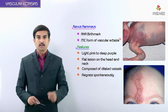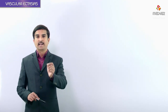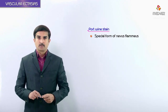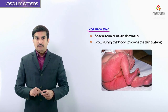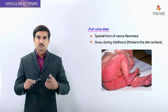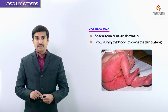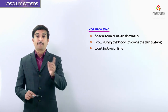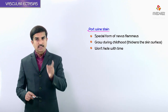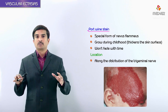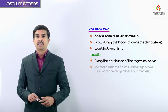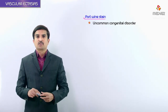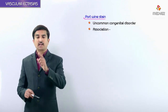Port wine stain is a special form of nevus flammeus. These tend to grow during childhood — particularly the thickness of the skin surface usually increases. Unlike other forms we studied, port wine stains won't fade with time.